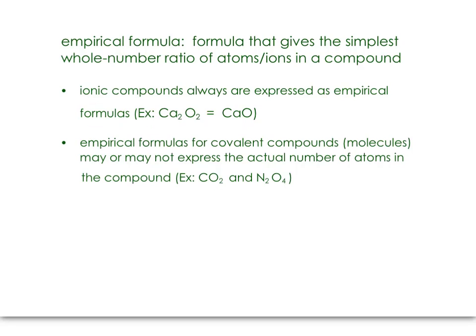When we write chemical formulas for ionic compounds, we always express them as empirical formulas. We just haven't called them that yet. So in calcium oxide, instead of writing Ca2O2, we always write CaO. We're looking for the simplest ratio of ions.